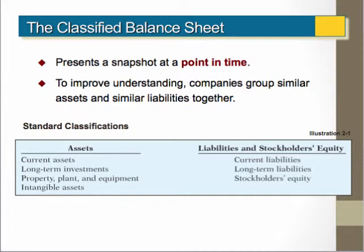On the other column of liabilities and stockholders' equity, we also show current versus long-term. Current liabilities are obligations of the company that must be satisfied in less than a year or an operating cycle. Long-term liabilities and stockholders' equity are obligations and investments of the stockholders that are expected to be within the company and will not be satisfied until a year or greater.